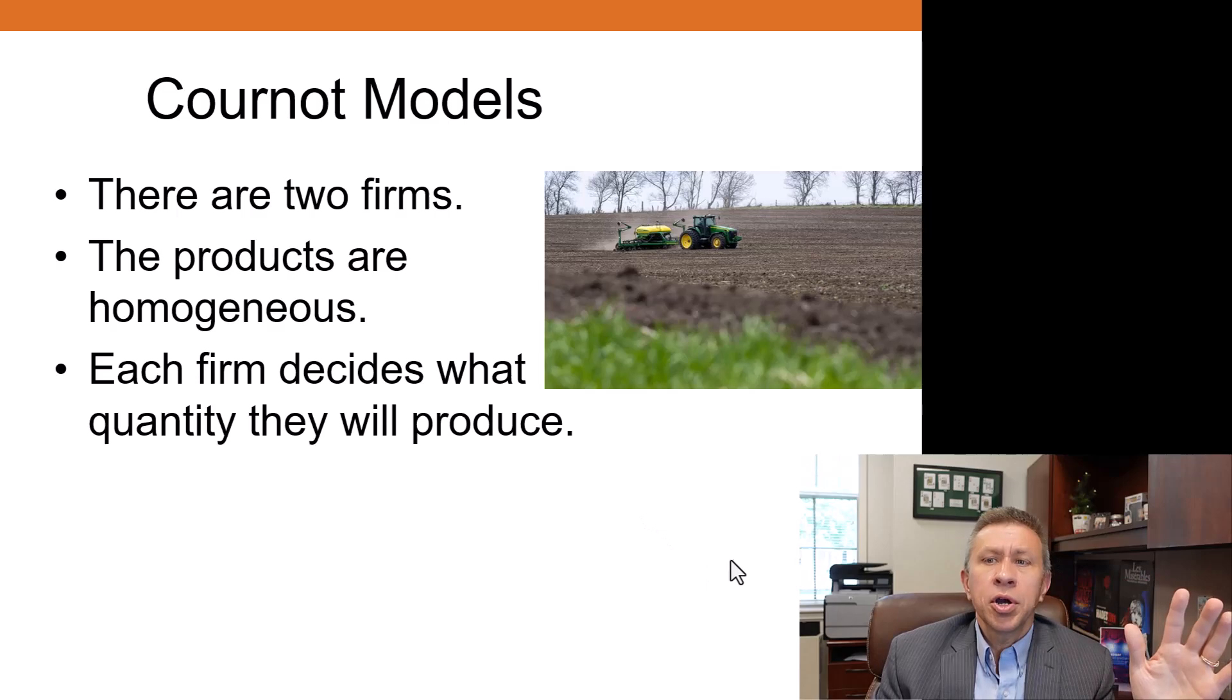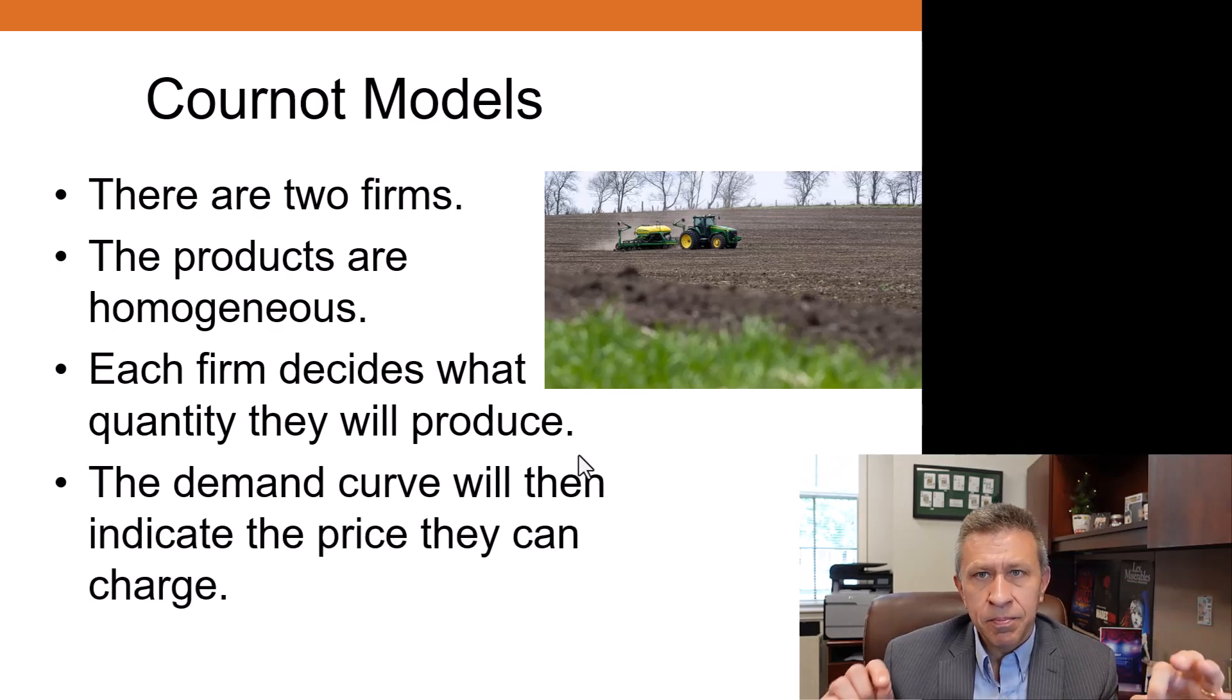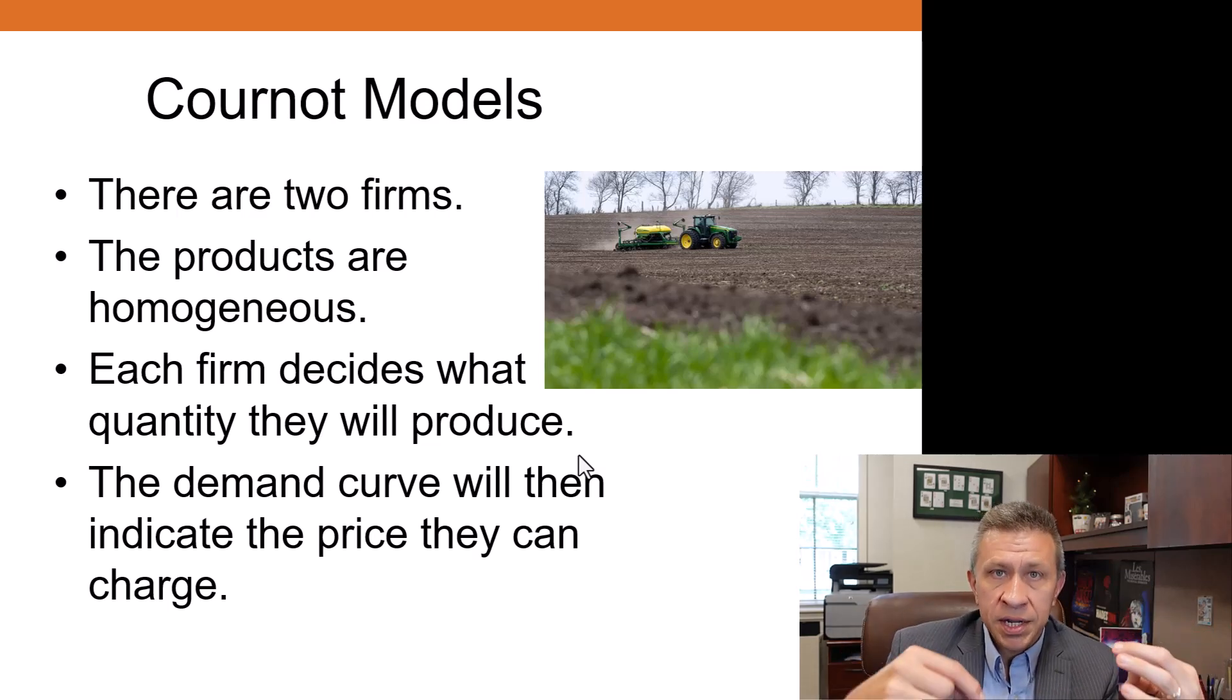The way Cournot models work is firms compete based on setting the quantities first and then going to market with all the quantity that is available. There are markets where this makes a lot of sense. Agriculture really makes a lot of sense because the planting decisions are made so far in advance.